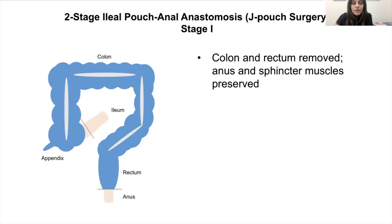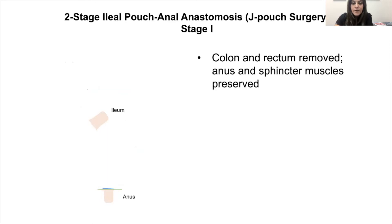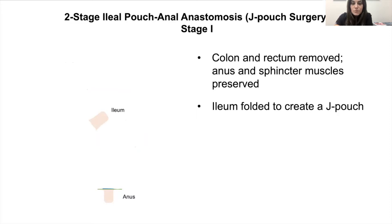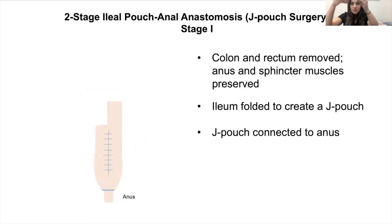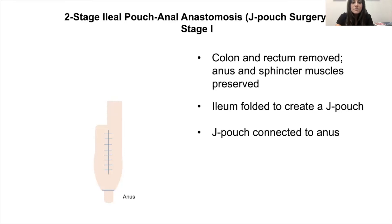We cut here and here, and now we're left with small bowel and the anus. Then what we do is fold the ileum in the form of a J. This J-pouch is then connected to the anus. The reason we fold it in the form of a J is that when we fold it on itself, we attach one limb to the other to form a common channel that can expand and hold stool similar to a rectum — this becomes your new rectum.